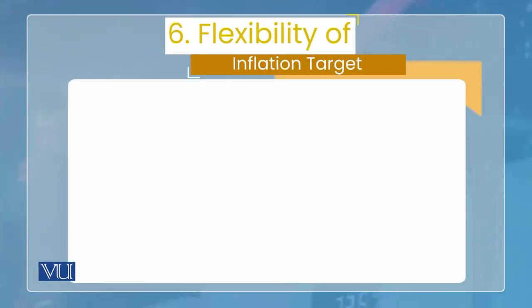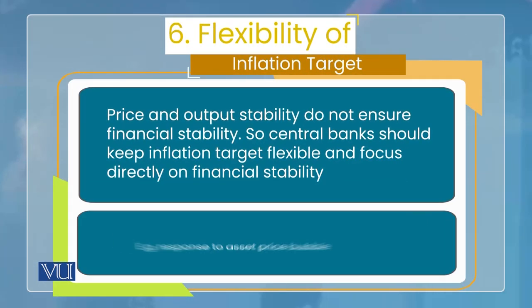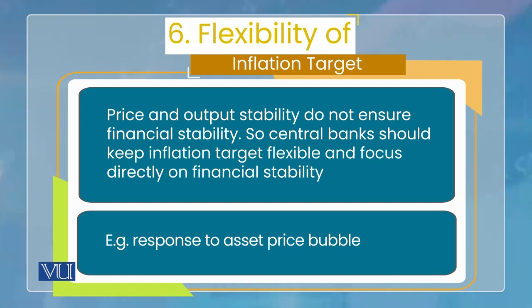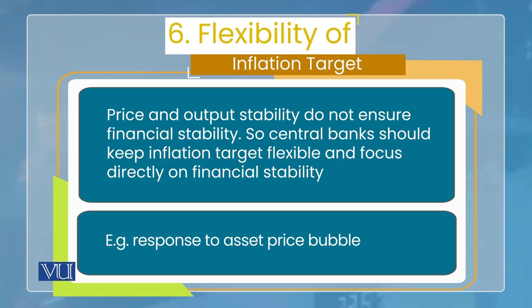Last point, lesson six, वो ये है कि flexibility of inflation target — ये lesson भी हमने learn किया है. Central banks को rigid नहीं होना चाहिए किसी एक inflation के number पे, कि हमने 2% हर सूरत में achieve करना है. इसलिए कि अगर उस पे rigid रहेगा country और monetary policy, तो वो inflation का target तो achieve कर ले, लेकिन जैसा कि हम पहले पढ़ चुके हैं कि inflation का target या price stability financial stability ensure नहीं करती.